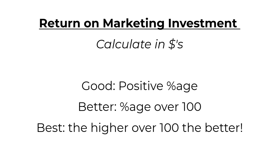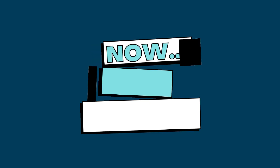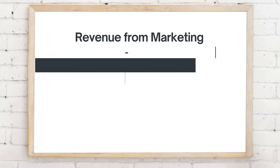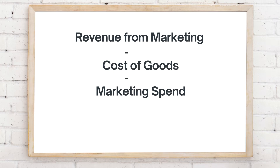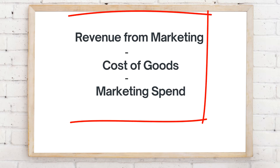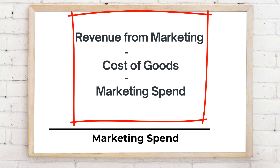This formula will be in dollars and will generate a percentage for you. The name of the game is to not only have a positive percentage, but to have a percentage that is well over 100%. If you have a percentage at 100%, it means that you have broken even. If you have a negative percentage, it means that you have actually lost money. The formula is: revenue your marketing initiative generated, minus cost of goods, minus marketing spend, divided by marketing spend, times 100.